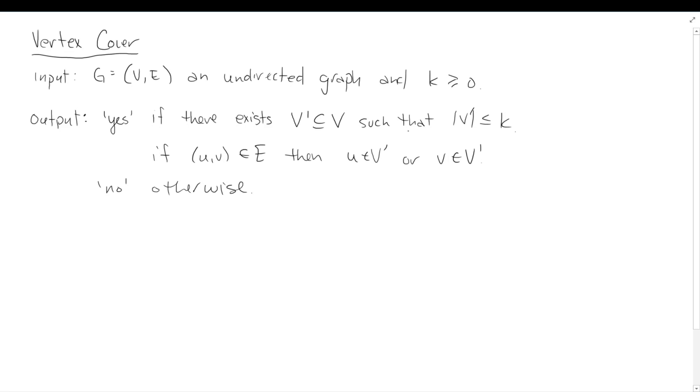It's going to be a subset of the vertices. The k threshold is telling us the size, so we want to make sure it's less than or equal to k. And then we have to check that it actually covers the edges. What makes a vertex cover a cover is that every edge, so if you have an edge in the edge set, then one of its endpoints must be in the vertex cover, or both, but at least one of them must be in there.